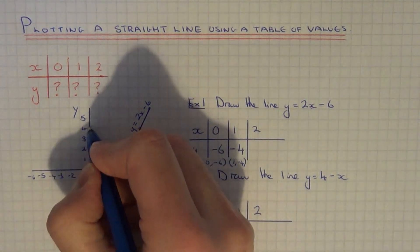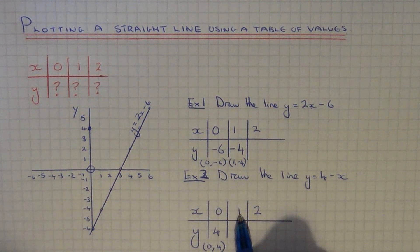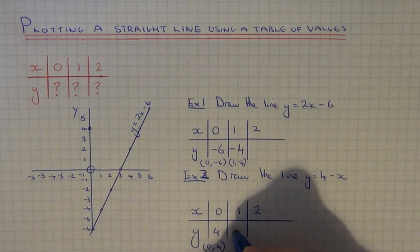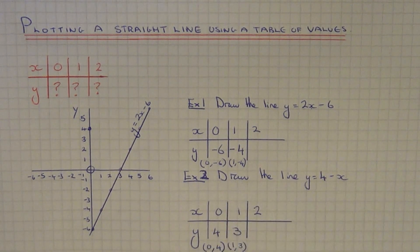Next, substitute x equals 1. So 4 take away 1 is 3. So our next coordinate point to plot is 1, 3.